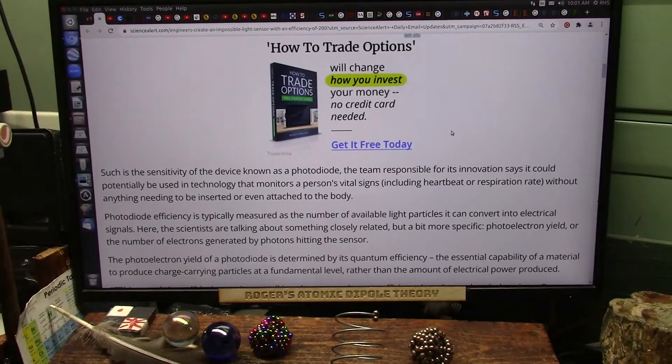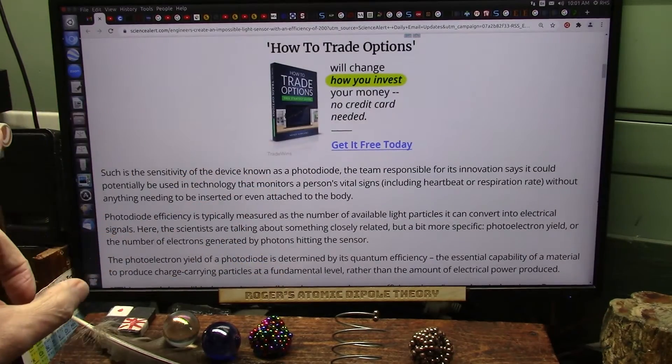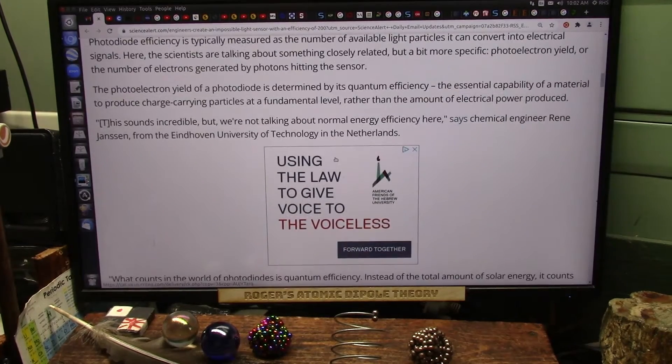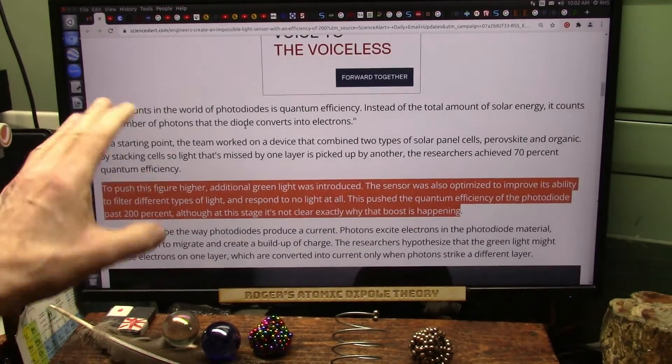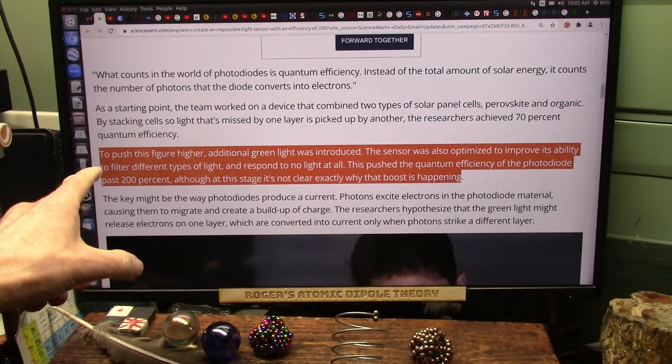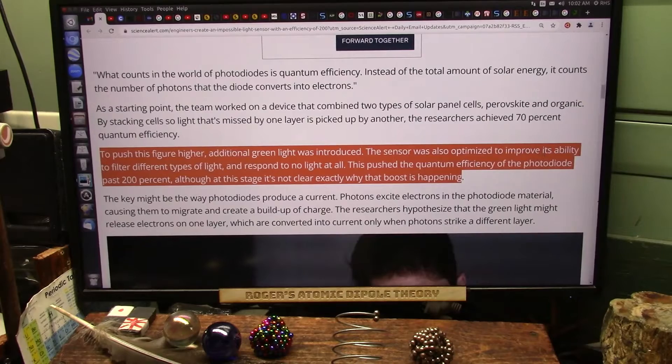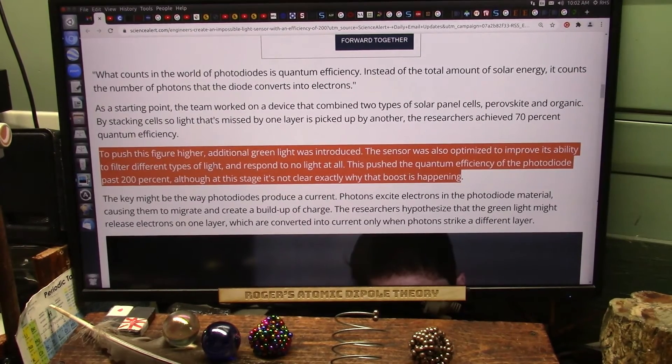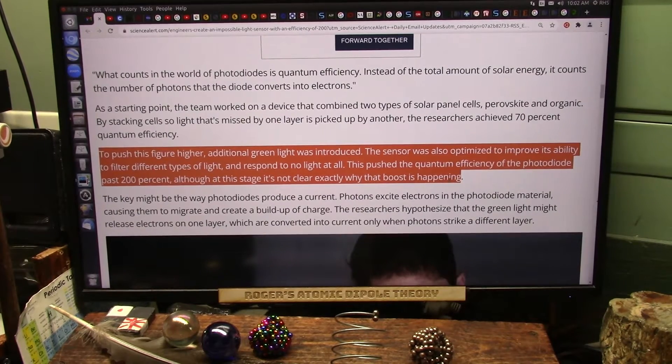Now I understand what it's doing - it's because of the pulsation of the dark particles against the light particles in what's called a photodiode. They don't really understand yet why this is working. To push the figure higher of efficiency, they added green light and optimized the sensor to filter different types of light. It responded to no light at all, pushing the quantum efficiency past 200%, although it's not clear exactly why that boost is happening.